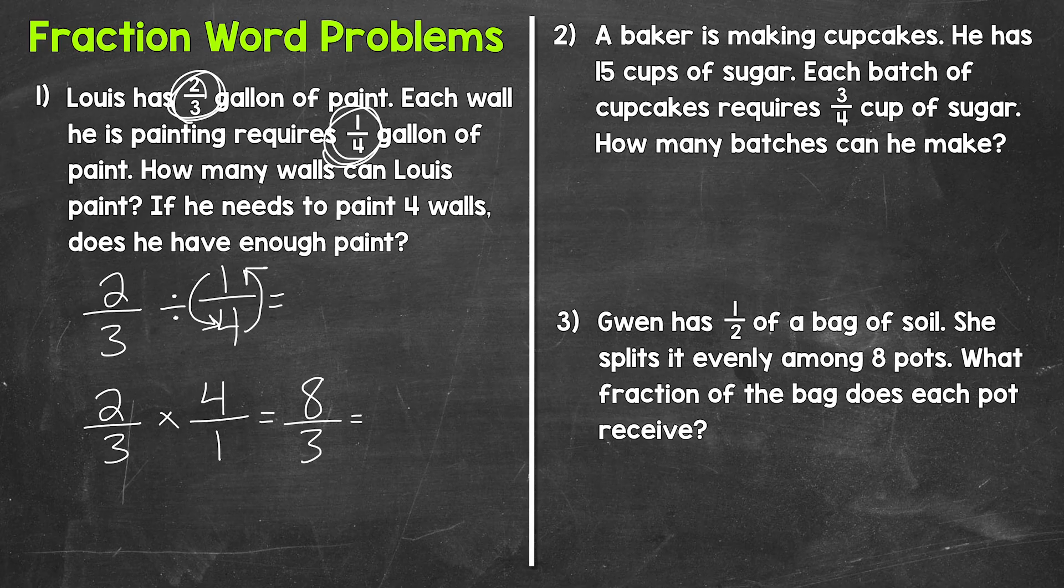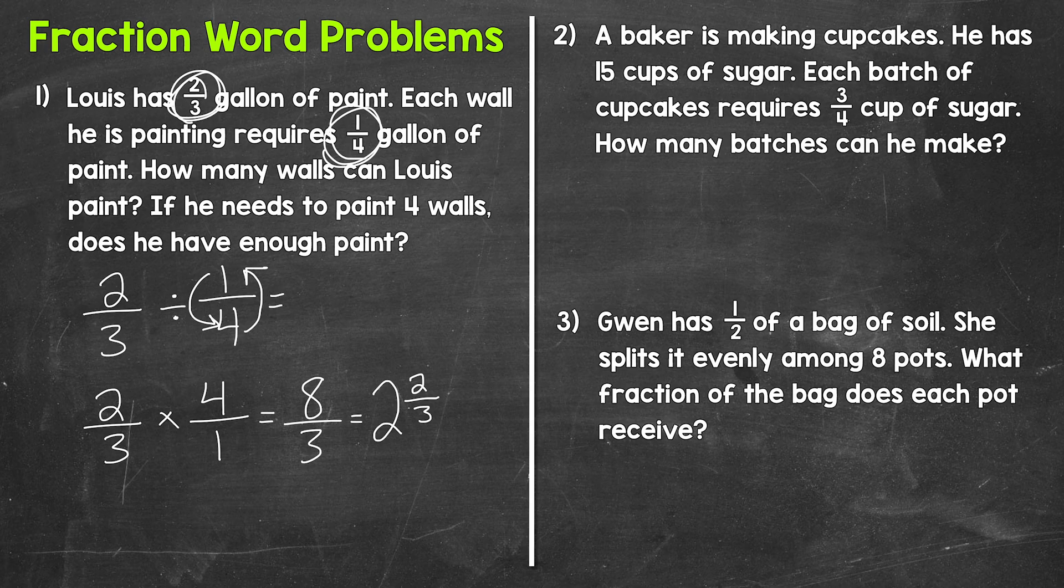So we need to do eight divided by three. So how many whole groups of three in eight? Well, two. So two is our whole number. That gets us to six. So we have a remainder here, we have a remainder of two. That's our numerator of the fractional part and then we keep our denominator the same. So we get two and two-thirds.